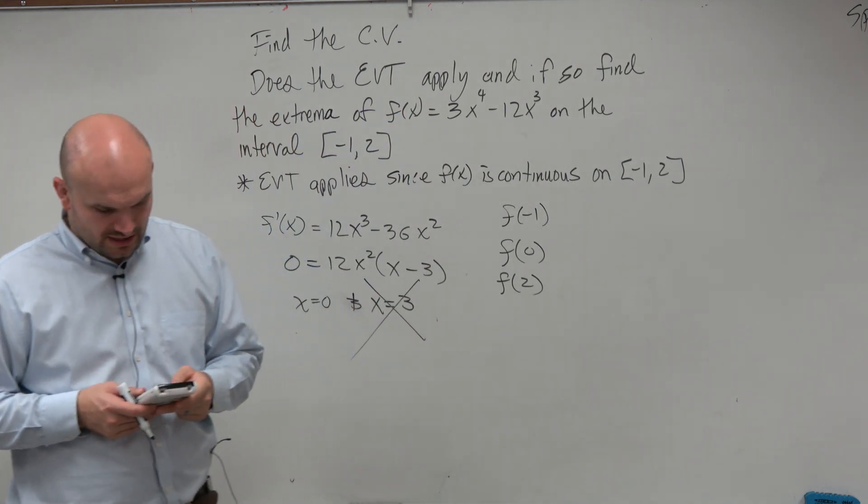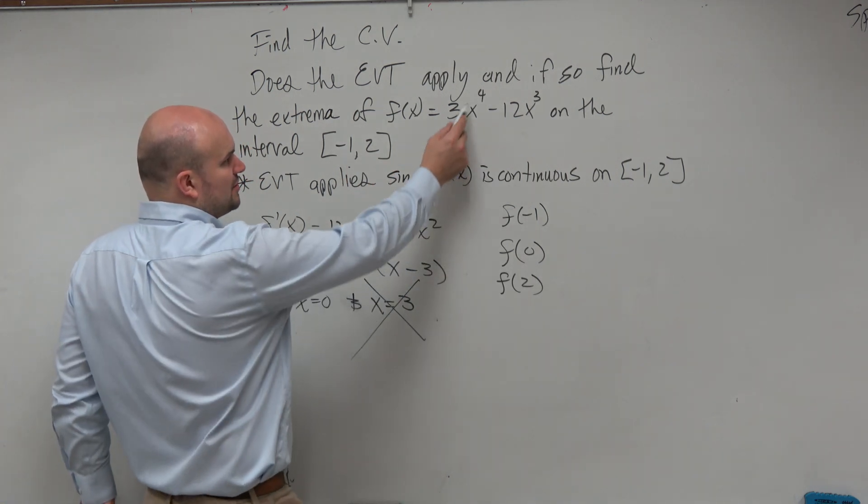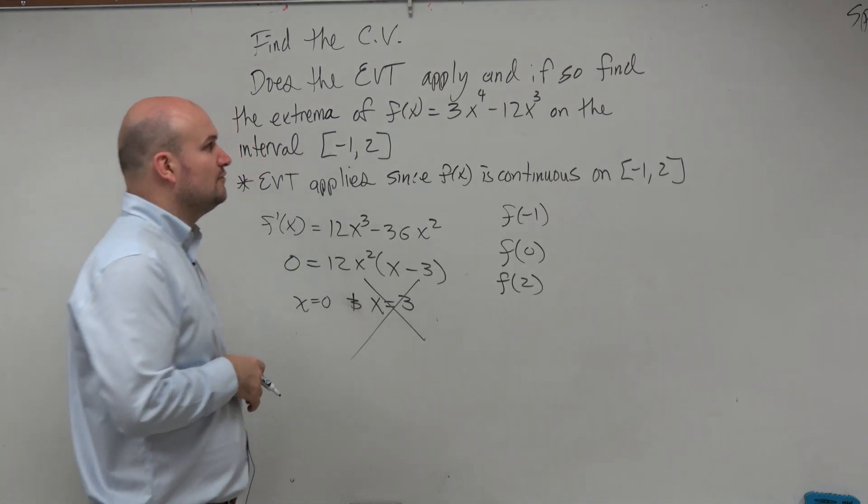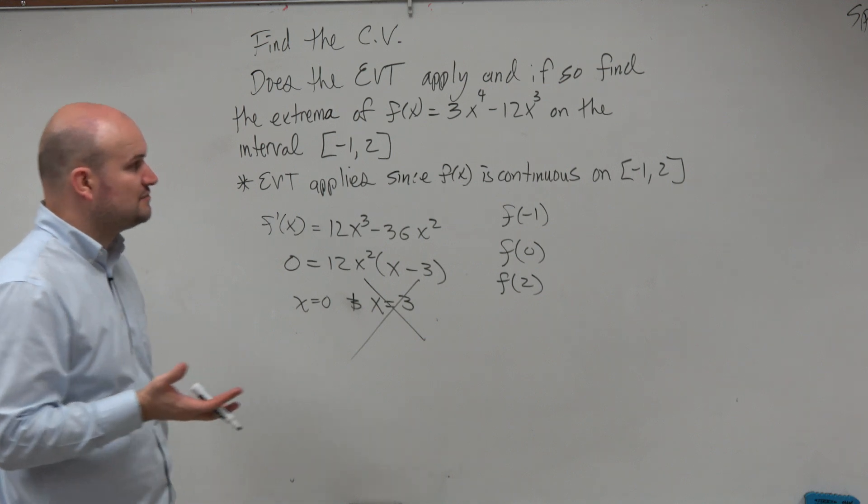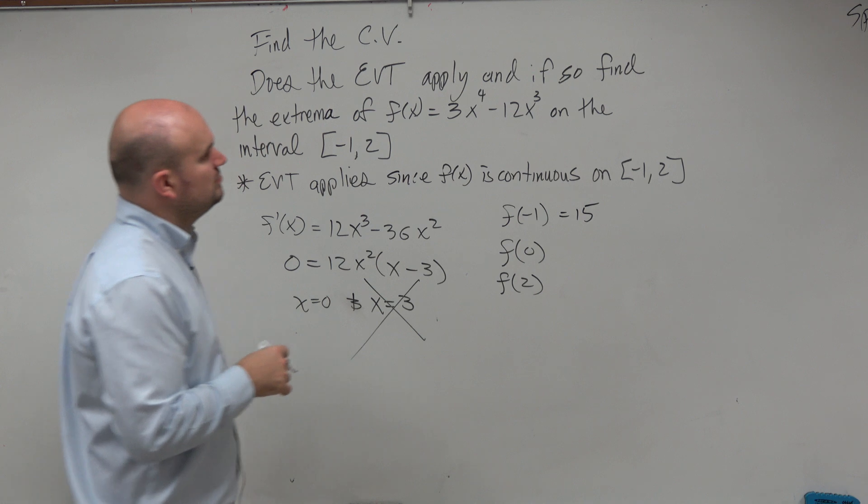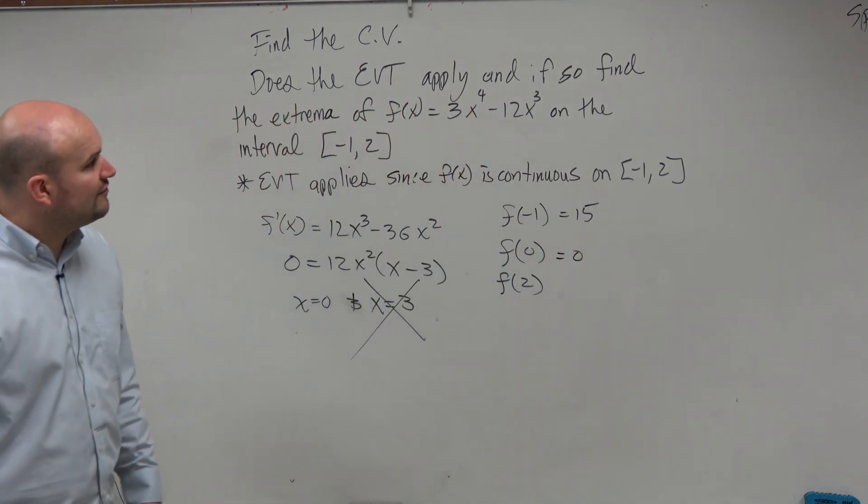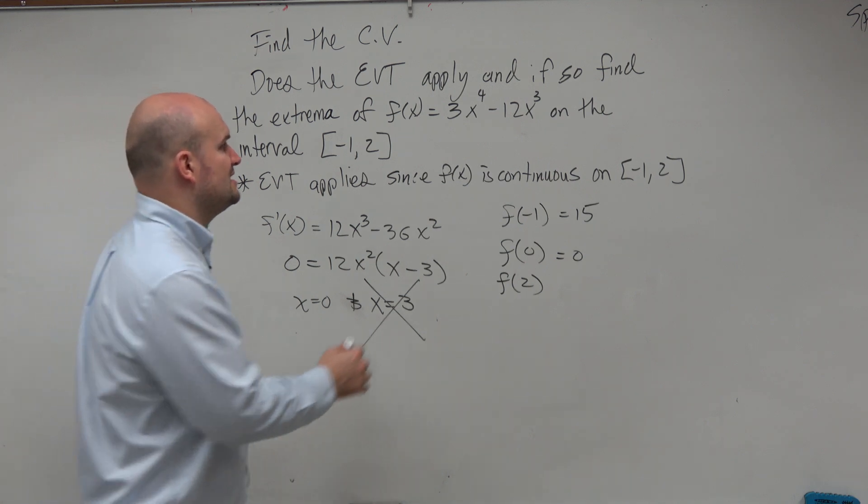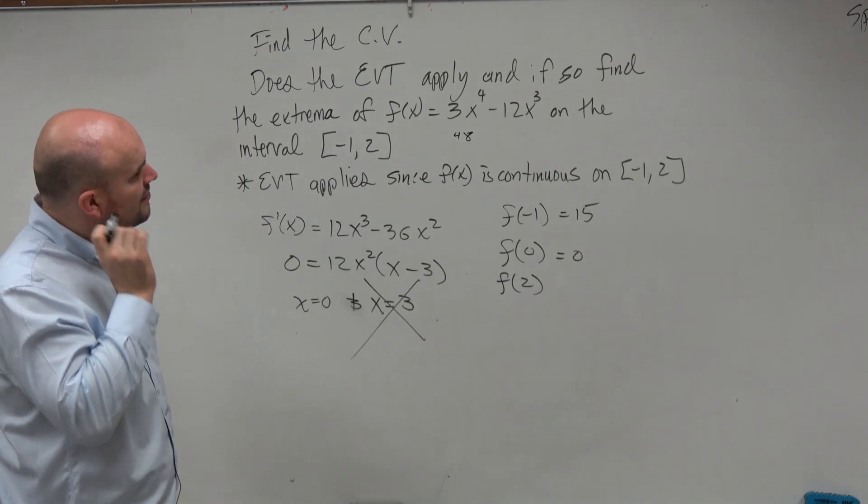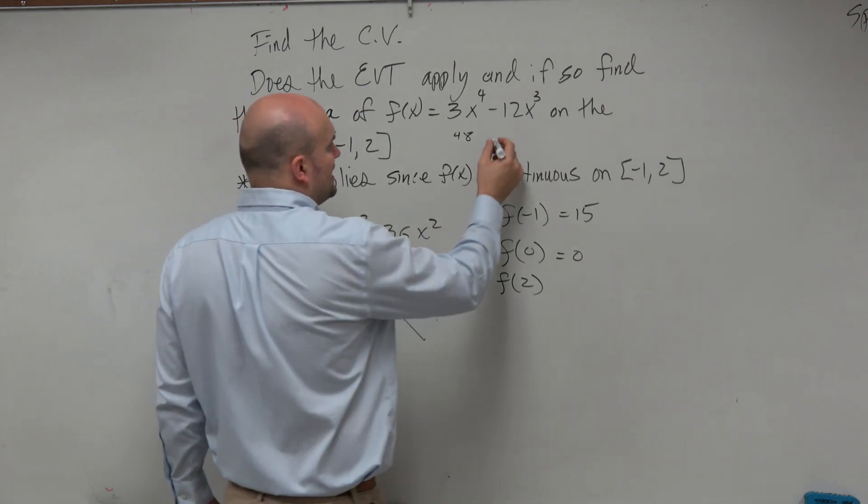So I'll show you guys how to do these later. But for right now, this isn't too bad. We actually, negative 1 and 0, we can just do on our own. Negative 1 to the fourth power is just positive 1 times 3. Negative 1 cubed is -1 times -12. So it's positive 12. So that equals 15. 0 is just going to be 0. Let's see, 2 to the fourth power is going to be 16. So that's 48. 2 to the third power is going to be 8. 8 times 12 is going to be 96.